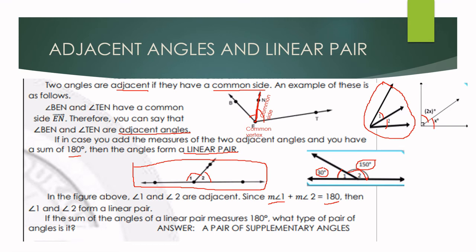That is, the measure of angle 1 is 30 degrees plus the measure of angle 2 which is 150 degrees, then the sum is 180 degrees. So if the sum of the angles of a linear pair measures 180 degrees, then it is a pair of supplementary angles.